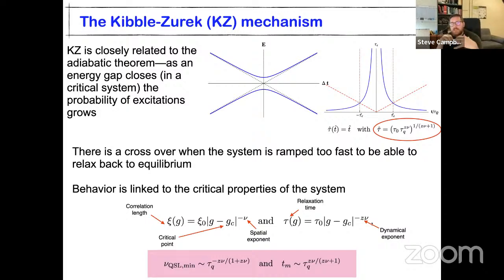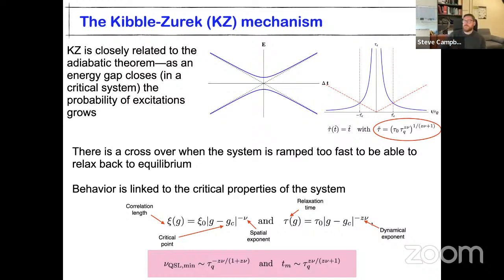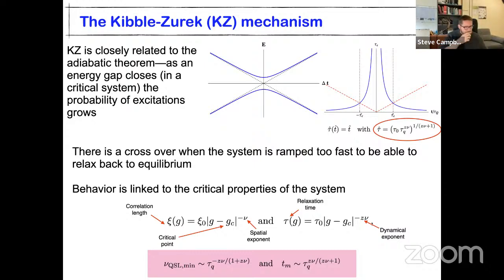Some features we were seeing in the Landau-Zener model were reminiscent of the Kibble-Zurek mechanism. If you're not familiar with it: Kibble-Zurek is a reinterpretation or more precise definition of the adiabatic theorem for critical systems and ramping through a phase transition. It's another reason I love the Landau-Zener model — it's a two-level system with an avoided crossing, but the gap closing and reopening is characteristic of second-order phase transitions, almost exactly like the Ising model.